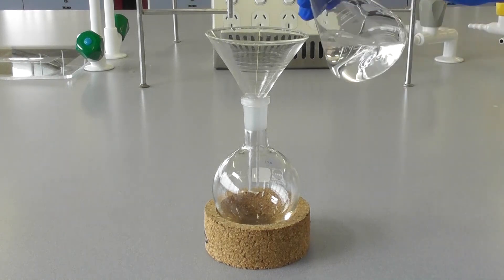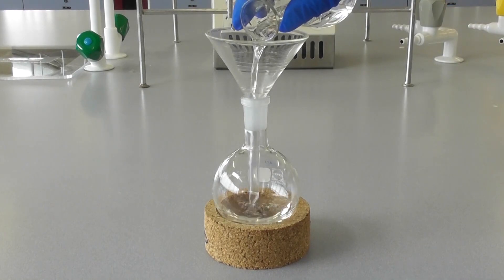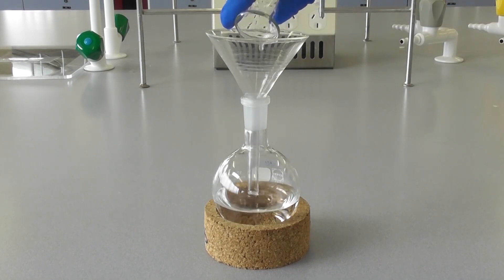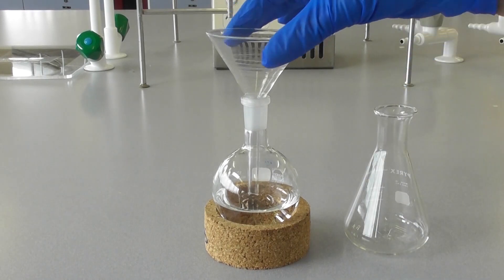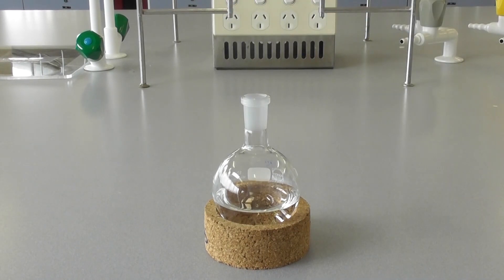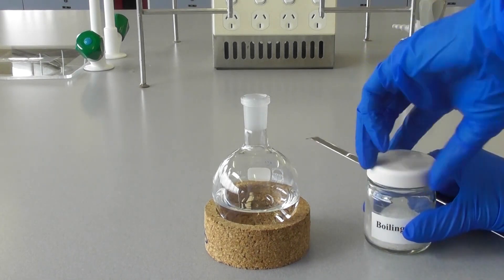Transfer the liquid to be distilled into the round bottom flask using a funnel. Then, with a spatula, add three or four boiling chips to the flask.